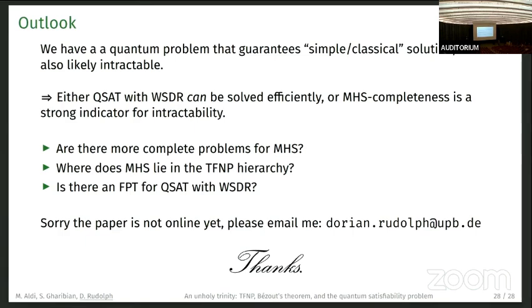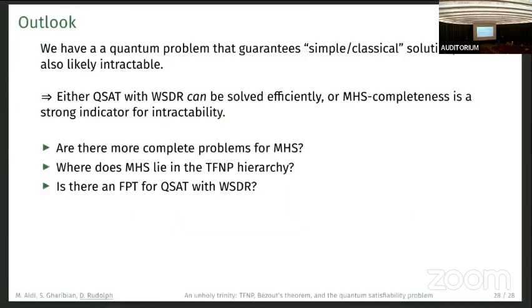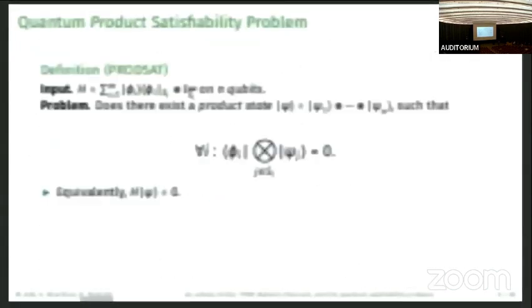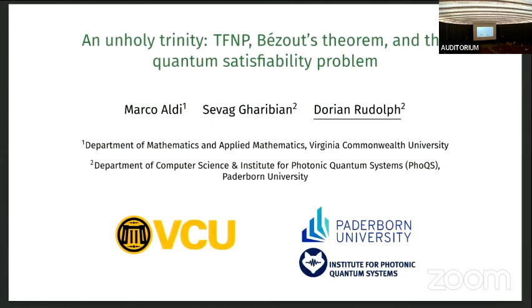Could you explain again the meaning of the title? It's just like we have a combination of three different very different seeming concepts. We have TFNP, which is a classical complexity class, a mathematical result from algebraic geometry, and our quantum aspect, the quantum satisfiability problem. Here we sort of combine all these three very different concepts into one cohesive story.